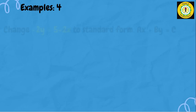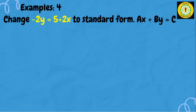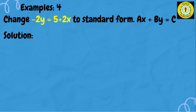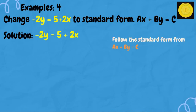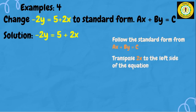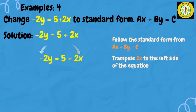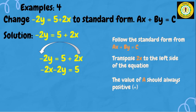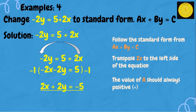For our fourth example, we change negative 2y equals 5 plus 2x to standard form ax plus by equals c. Notice the equation is in the form y equals mx plus b, so we transform it into ax plus by equals c. We transpose 2x to the left side. Remember, the value of a should always be positive, so we multiply by negative 1. The answer is 2x plus 2y equals negative 5.